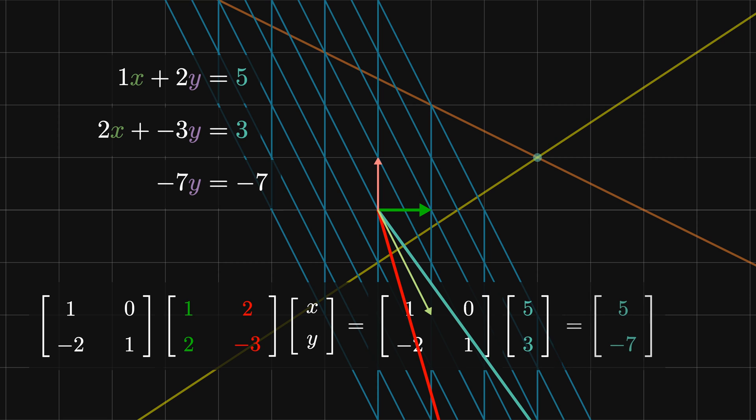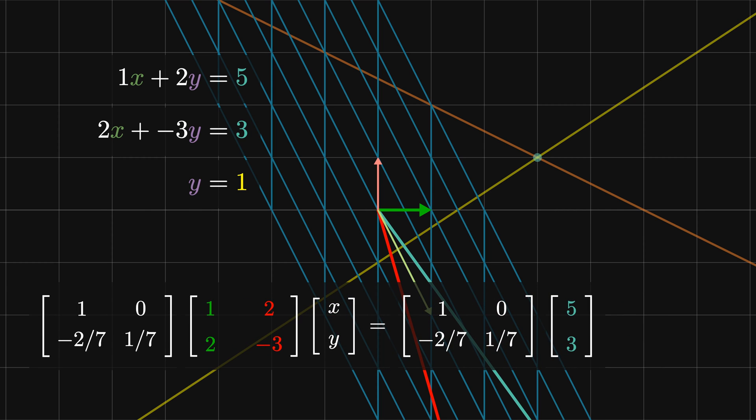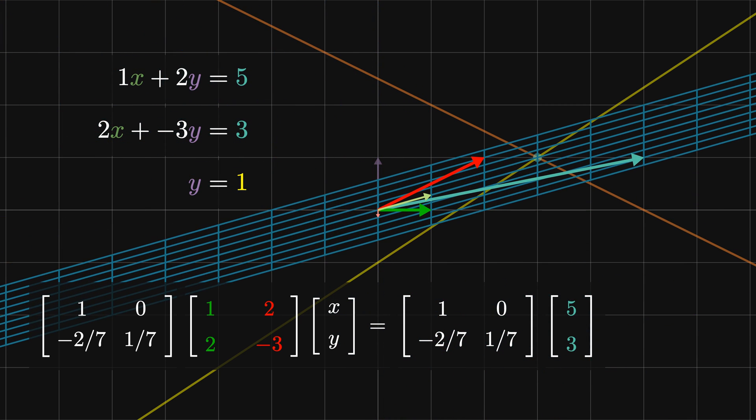Likewise, our solution vector gets mapped to [5, -7]. Our second step is solving for y by dividing both sides of the third equation by minus 7. In matrix form, this corresponds to dividing the second row by minus 7. This matrix transformation corresponds to shrinking the y direction by a factor of 7. Our new x vector doesn't change because its y component is already 0. The y component of the y and solution vectors are both -7, so the y vector becomes [2, 1] and the solution vector becomes [5, 1].